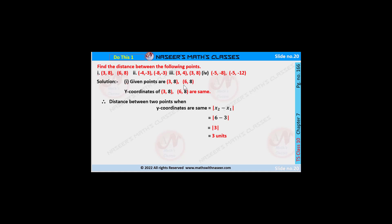In the first bit, the given points are (3, 8) and (6, 8). Here the y-coordinates are the same. When y-coordinates are the same, the distance between the given points is equal to |x2 - x1|. Here x2 is 6 and x1 is 3, so we get |6 - 3| = 3. Therefore, the distance between the given points is 3 units.